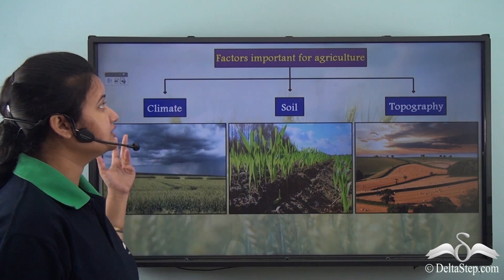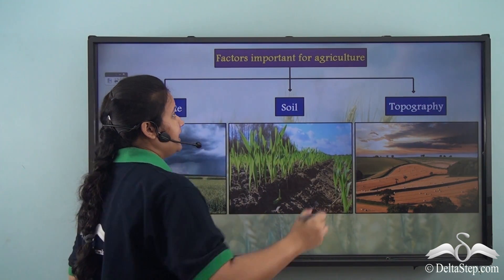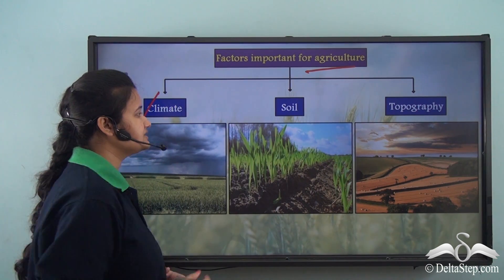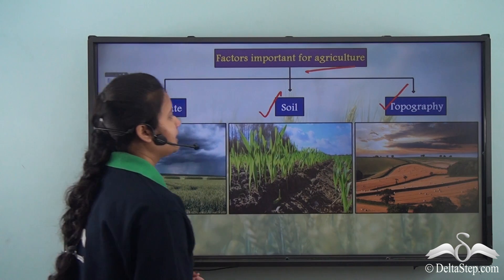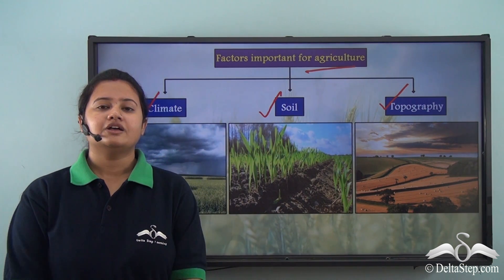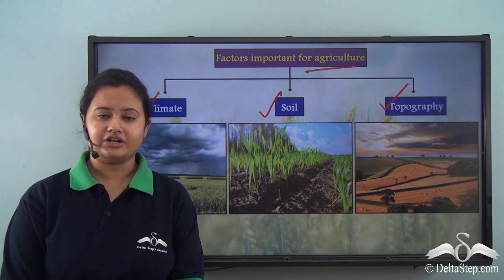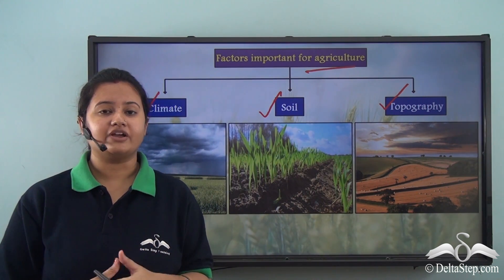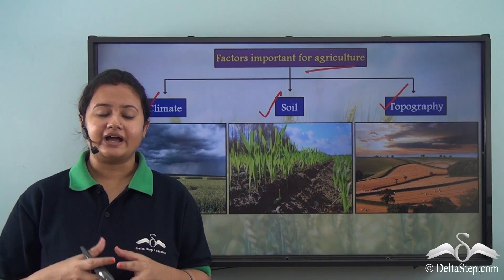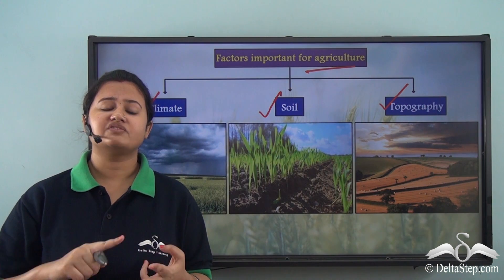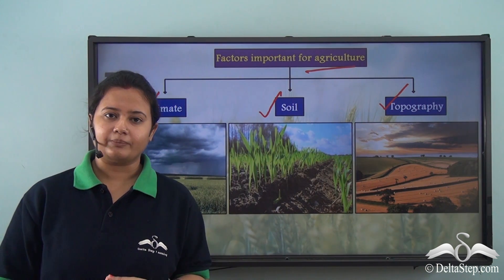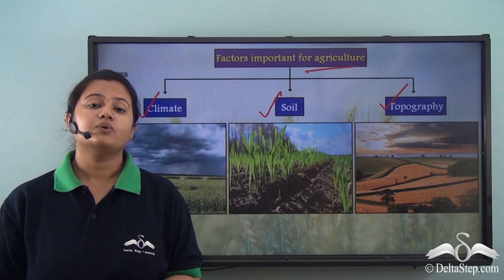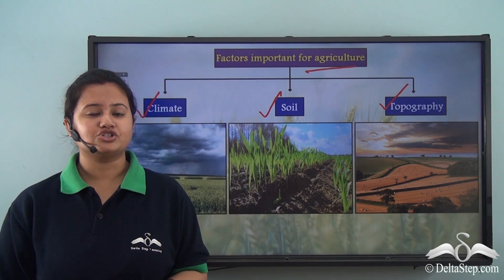So the three important factors that affect agriculture are climate — meaning temperature and precipitation conditions — soil, and topography. This brings us to the end of today's discussion on agriculture. In this introductory video, we looked into the definition of agriculture as a primary activity involving cultivation of crops, fruits, vegetables, and rearing of livestock. We also discussed the various branches of agriculture and the factors important for healthy crop production.